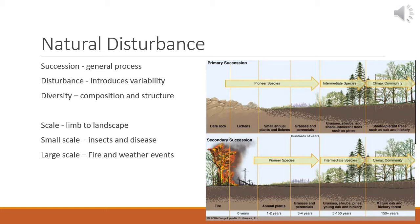Generally, higher severity disturbances like large wind events or severe fire encourage low diversity. Likewise, low severity disturbance encourages more diversity. The successional theory fits best with the large-scale severe disturbances or in systems that are starting from an almost lifeless state.